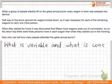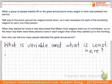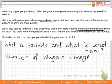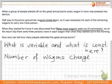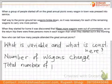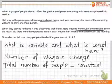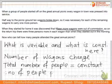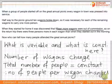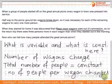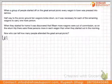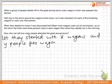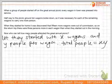What is variable and what is constant in this particular case? The number of wagons is changing — some broke down going to the picnic, and more broke down coming back. But the total number of people remains constant, since the people from broken wagons were adjusted into the remaining ones. The number of people per wagon is also changing. So let's say they started with x wagons and y people per wagon. Total number of people equals x times y.